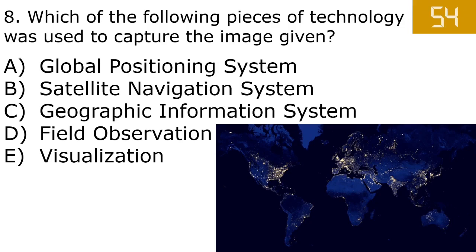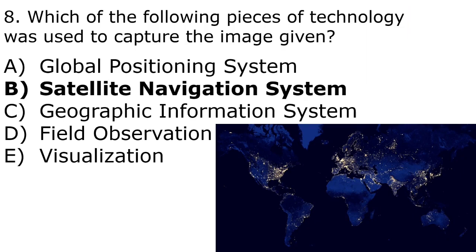The correct answer is B, satellite navigation system. This is a picture, so you should have known that to pick B. It's not visualization, which would be more like a drawing. It's not field observation — they're not at a city taking pictures of all the lights. It's not a geographic information system because we're not looking at various scales. And it's not a global positioning system because we're not looking at absolute location or distance. It's a satellite navigation system because we are looking at a satellite image.